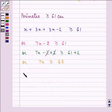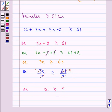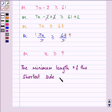Dividing both sides by 7, we have 7x divided by 7 is greater than or equal to 63 divided by 7. On simplifying, we have the value of x, that is, the shortest side is greater than or equal to 9. Hence, the minimum length of the shortest side is 9 centimeters.